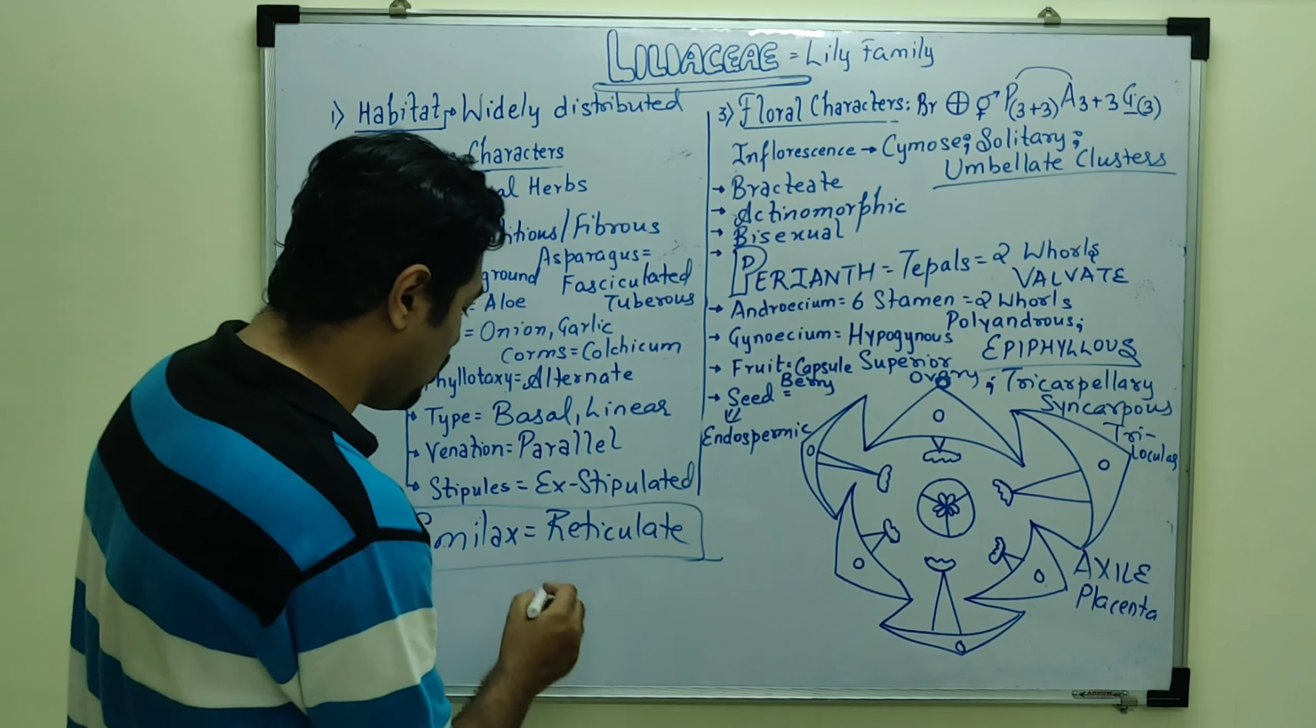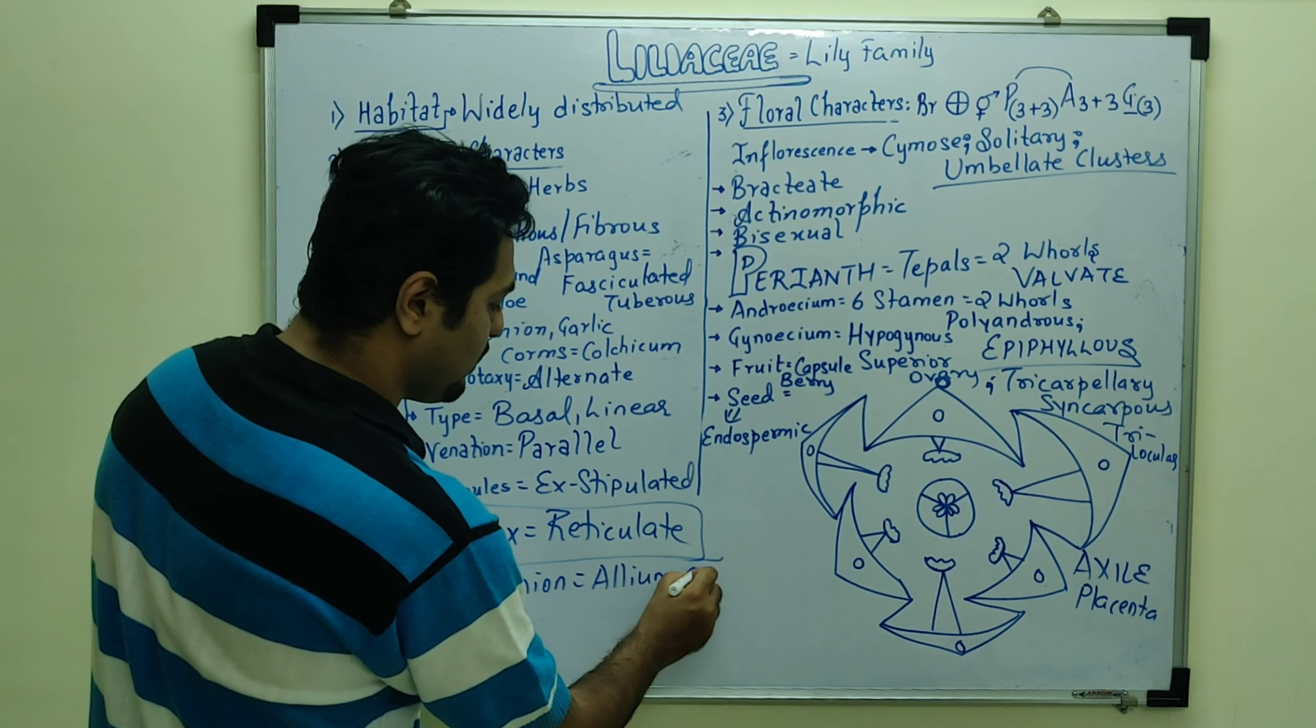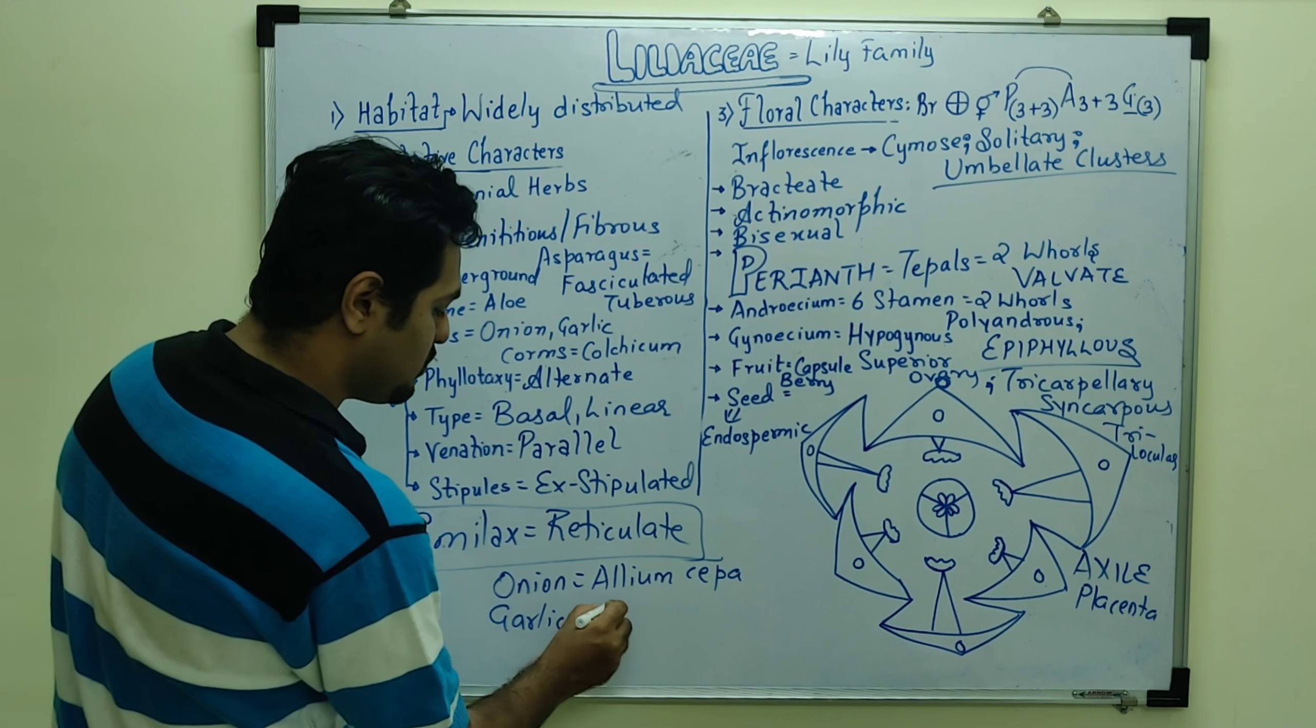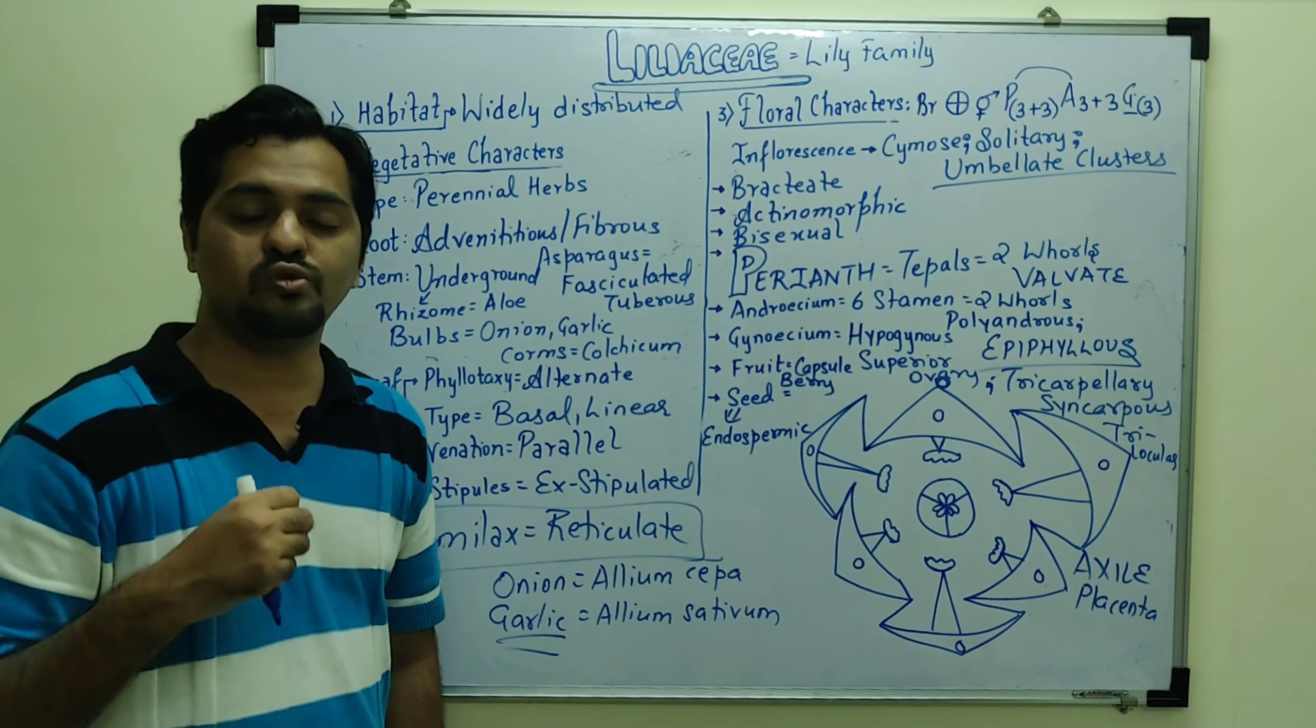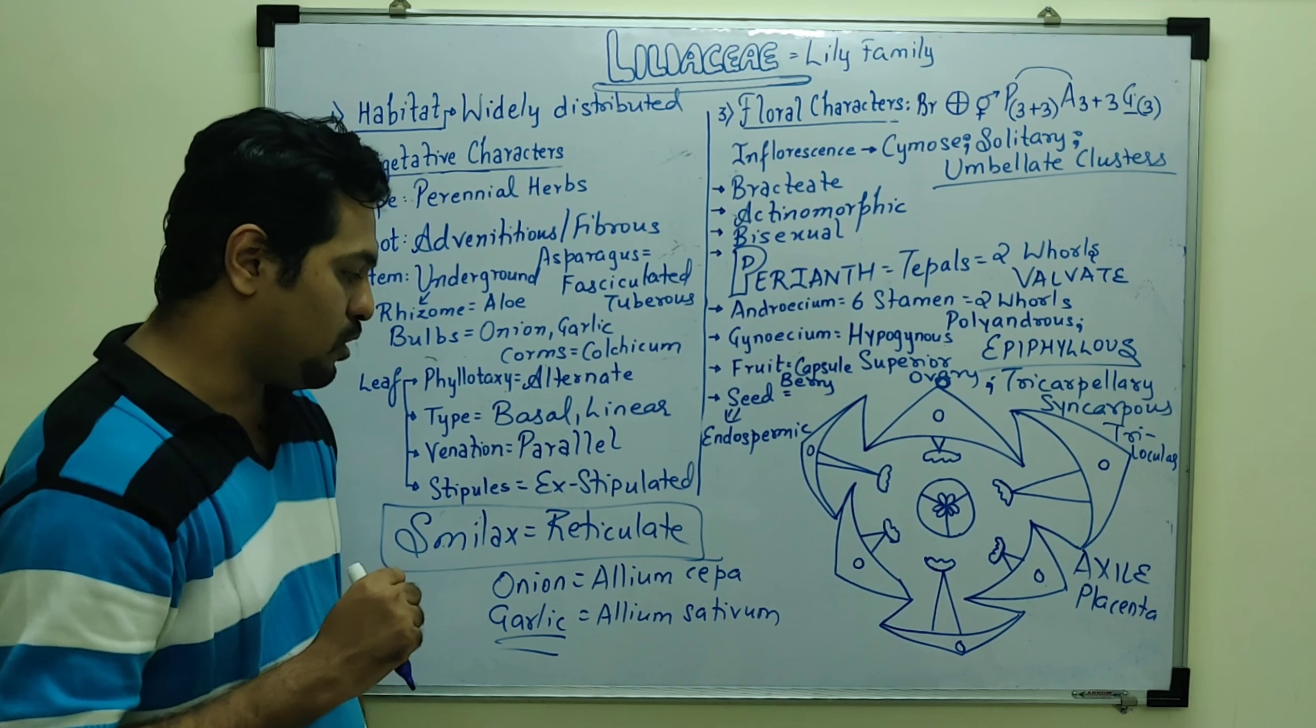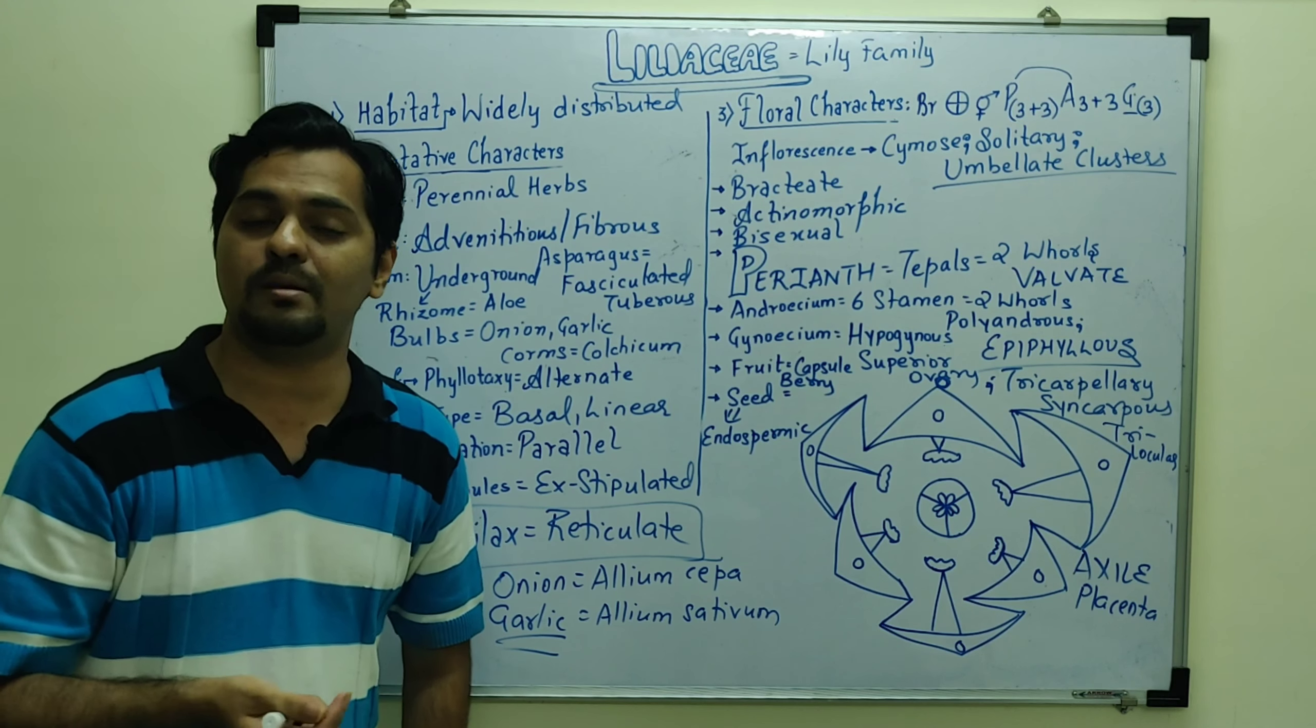The represented members are onion and garlic which are the main examples. Onion, we have Allium cepa. Scientific name. And garlic, that is Allium sativum.